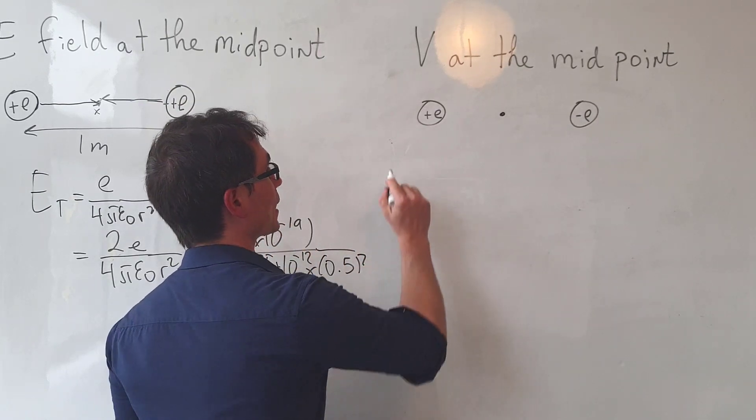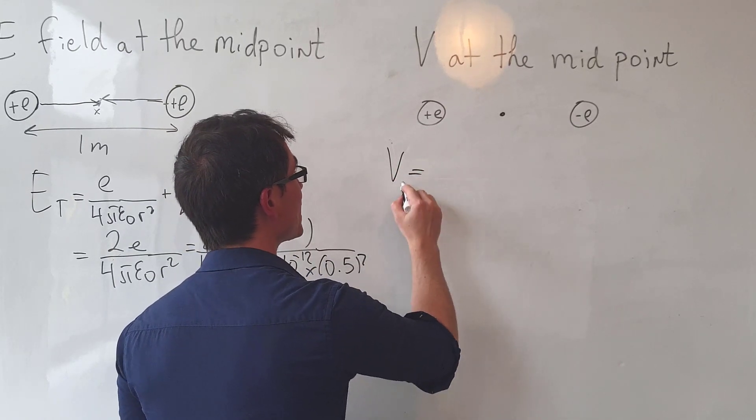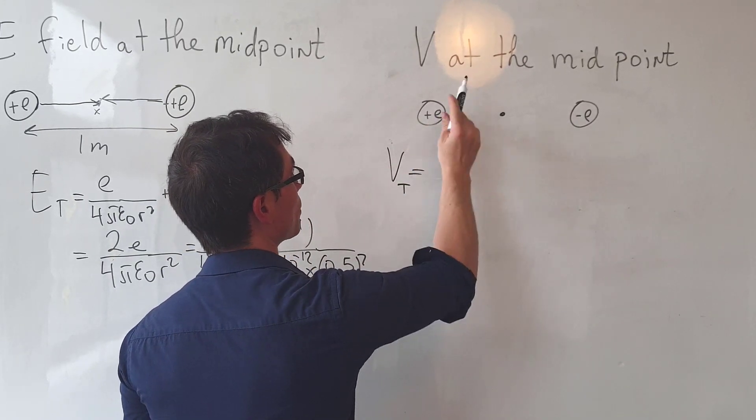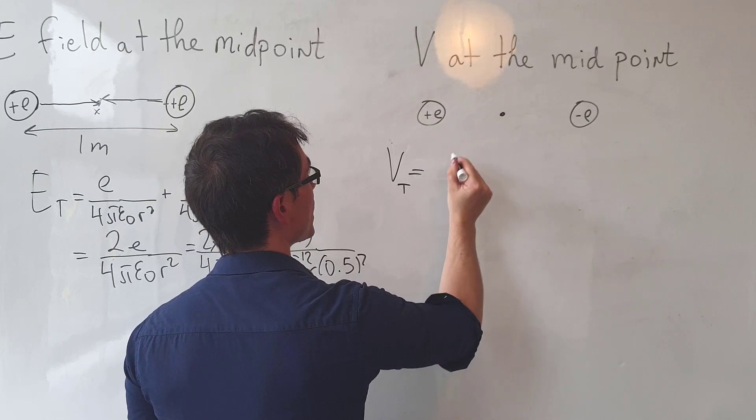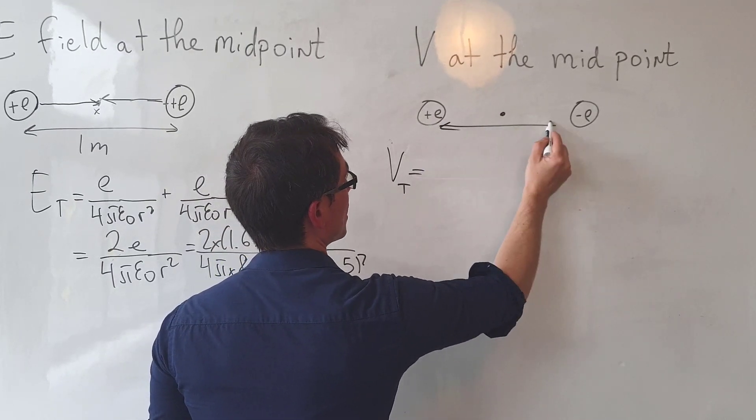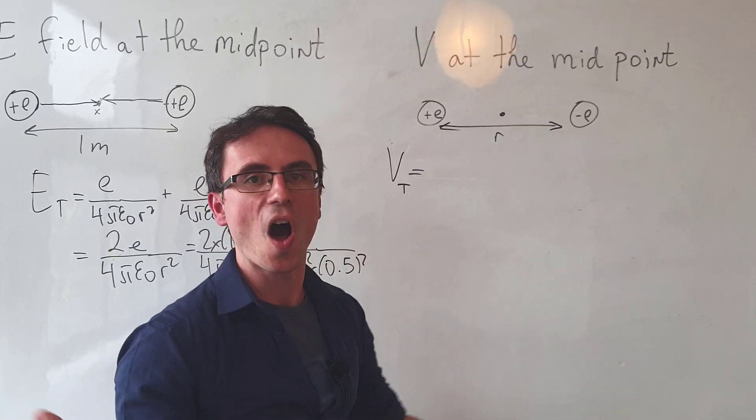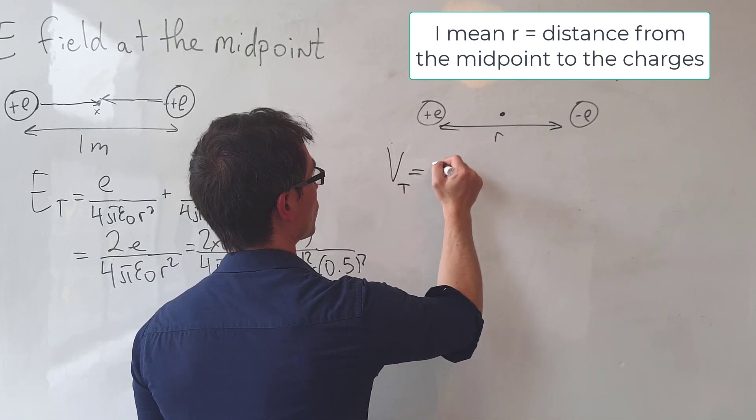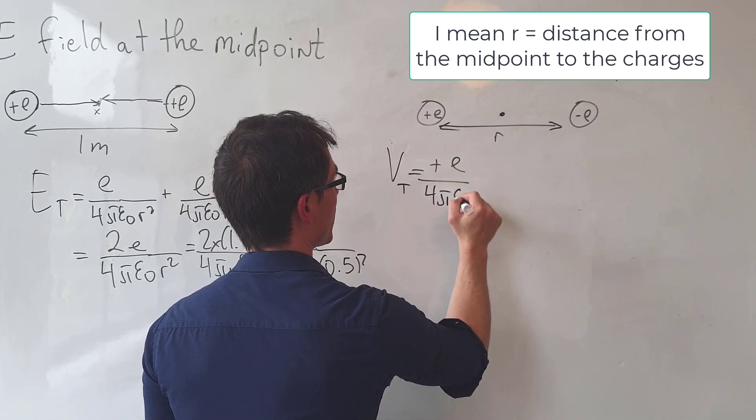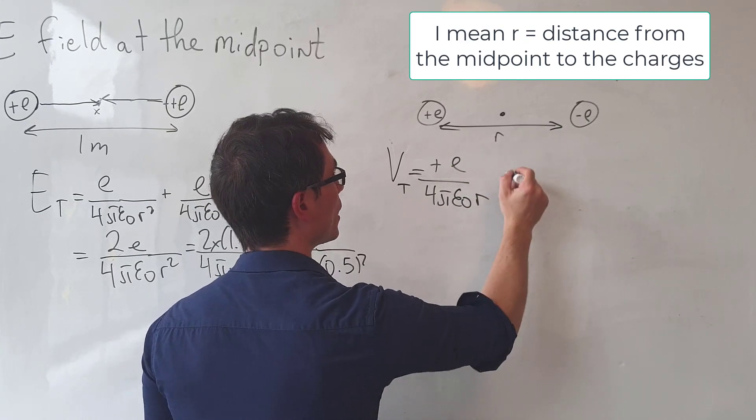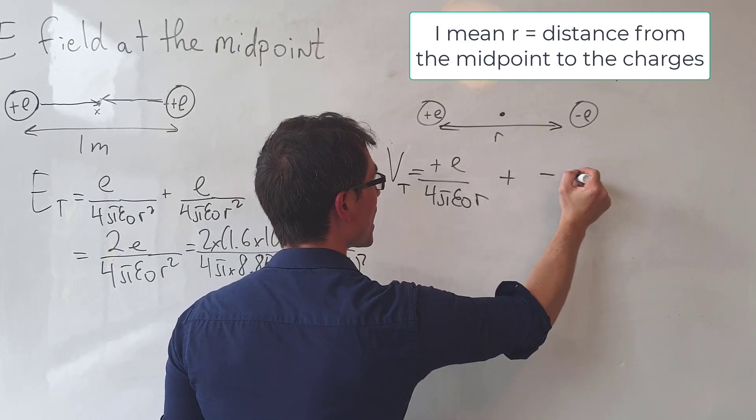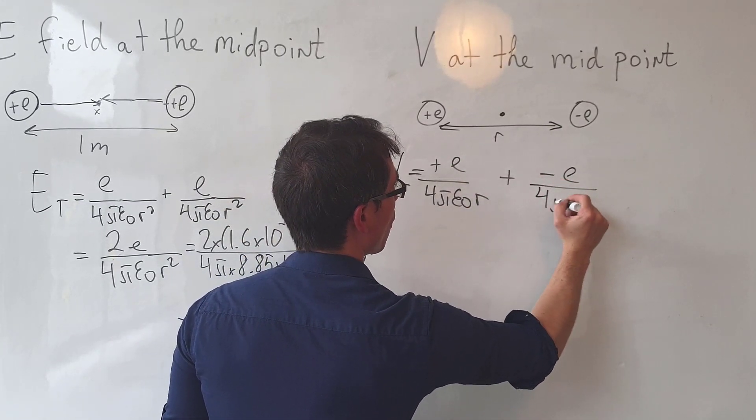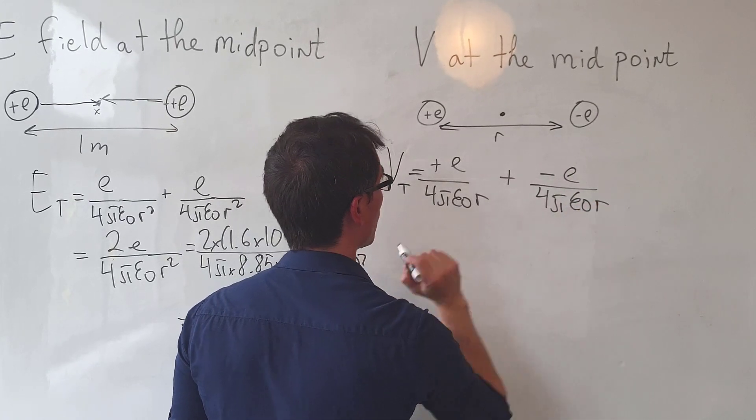So the total electric potential will be equal to the electric potential from this. Let's say that the distance is, once again, I'm just going to call it r in general, will just be equal to plus E over 4πε₀r plus minus E over 4πε₀r.